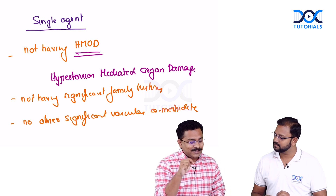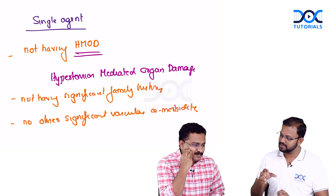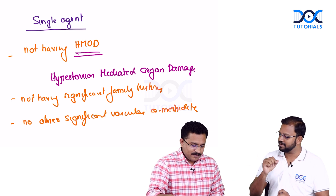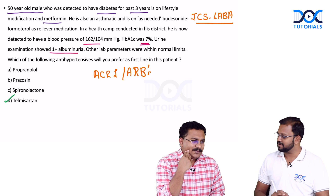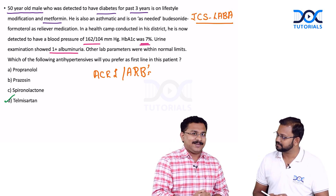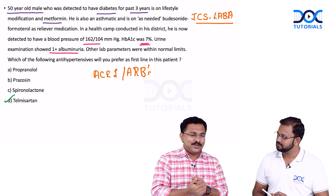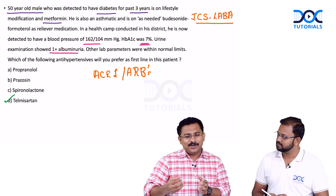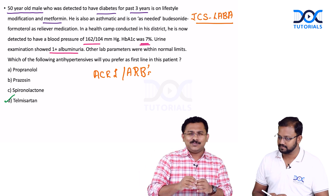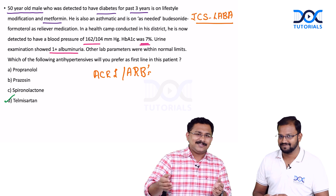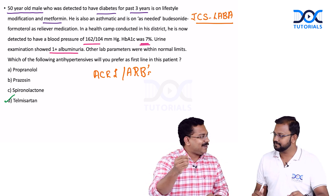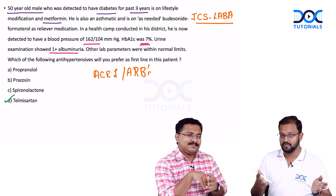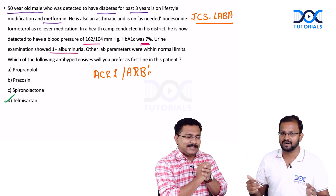If the patient has vascular comorbidities, you go for a dual agent. In our case, the patient has diabetes — a vascular comorbidity — so combination therapy is warranted. If there were an option of telmisartan with amlodipine as a combination, that would be preferred over telmisartan alone. Contrast this with an elderly patient, say 70 years old, with no prior comorbidities and no significant family history — there, a single agent may suffice.